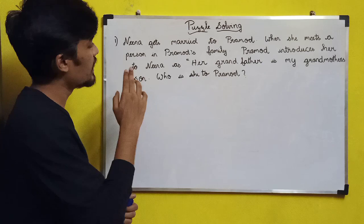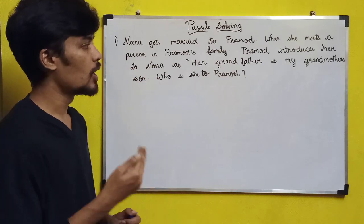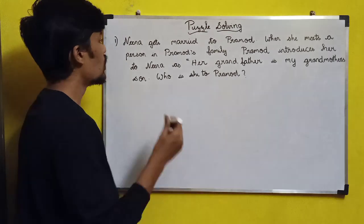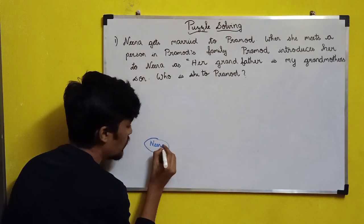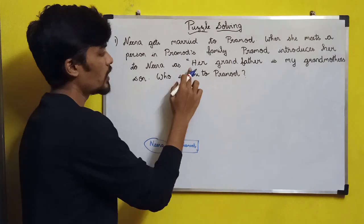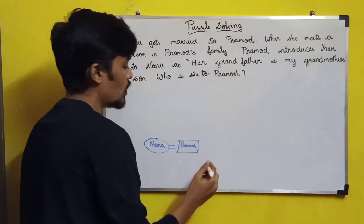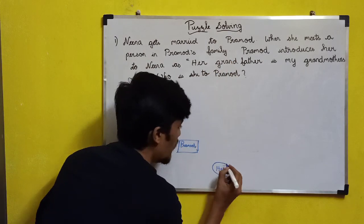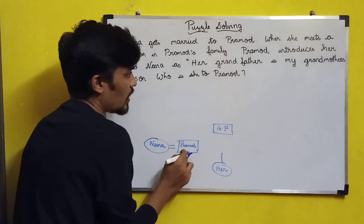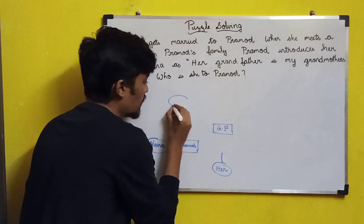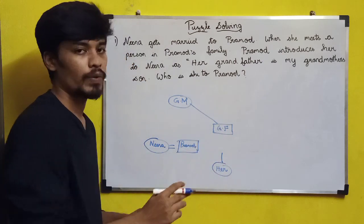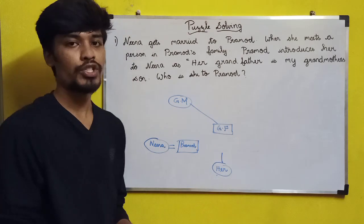Next puzzle solving: Nina gets married to Promote. When she meets a person in Promote's family, Promote introduces her to Nina as 'her grandfather is my grandmother's son.' Who is she to Promote? Nina gets married to Promote — that is the first sentence. Promote introduces her: 'her grandfather is my grandmother's son.' So Promote's grandmother's son is her grandfather. Working through the relationship, that gives us the answer.